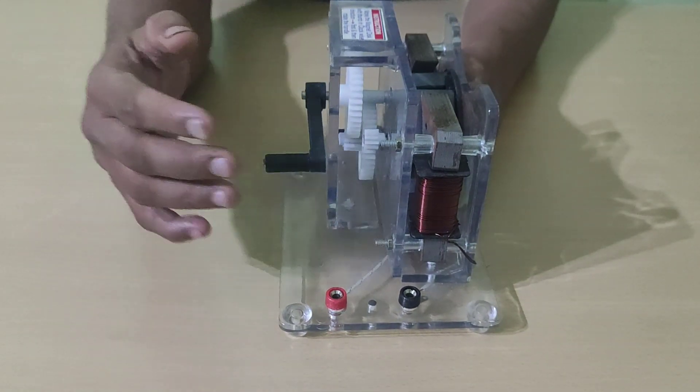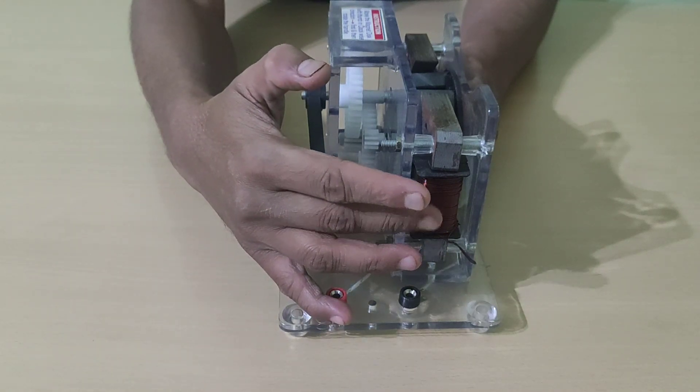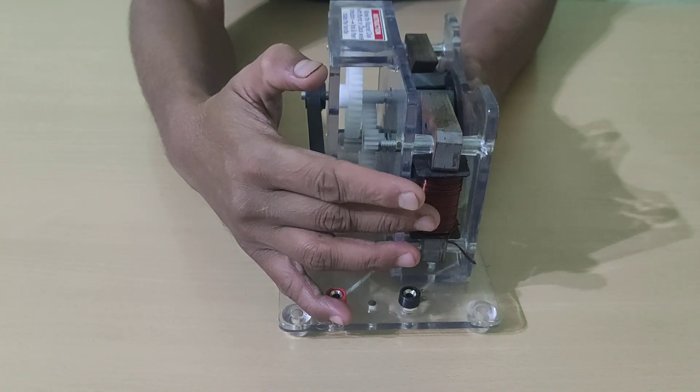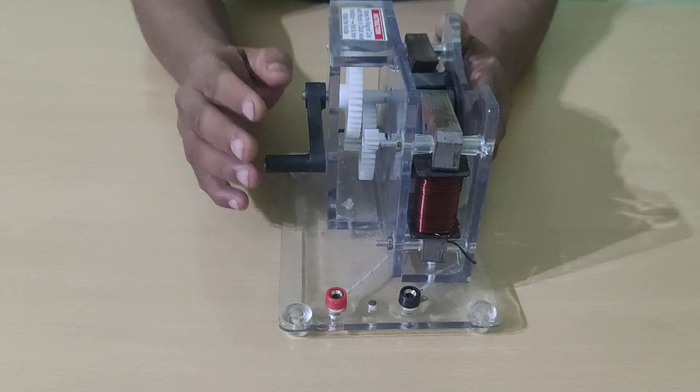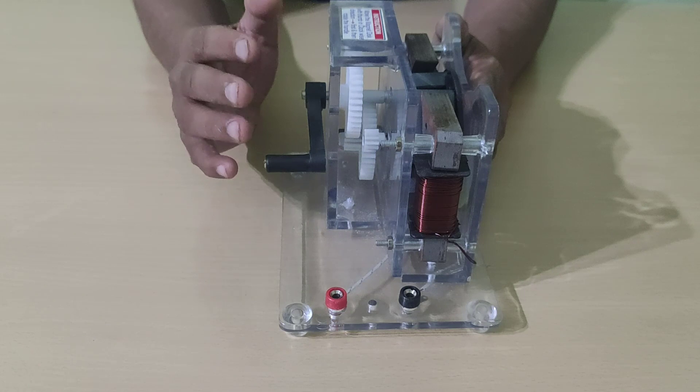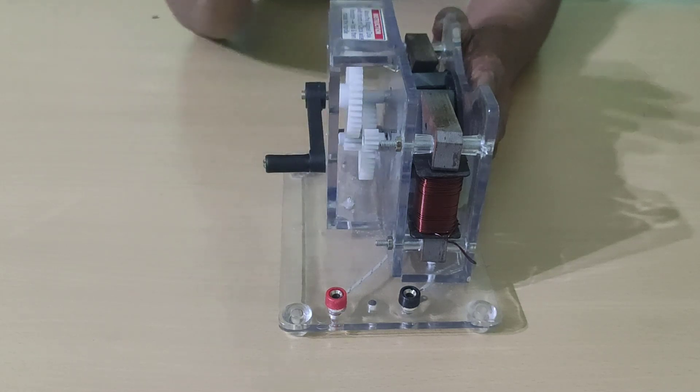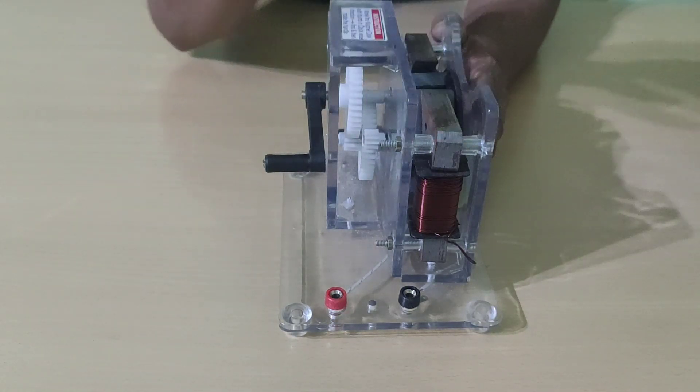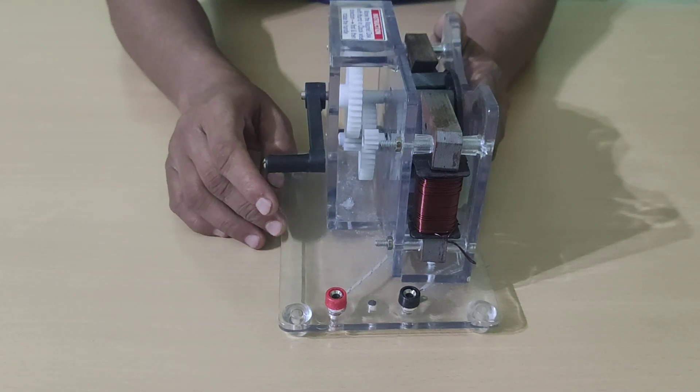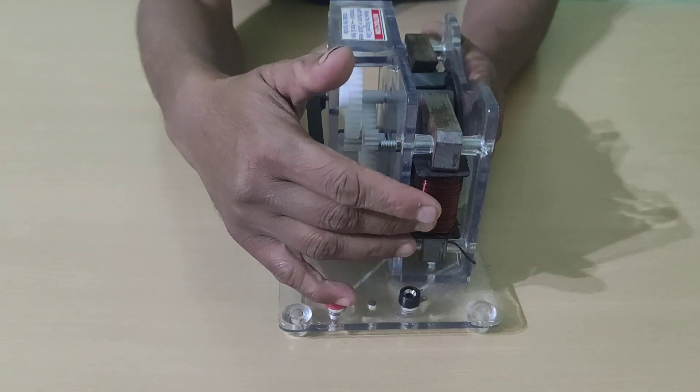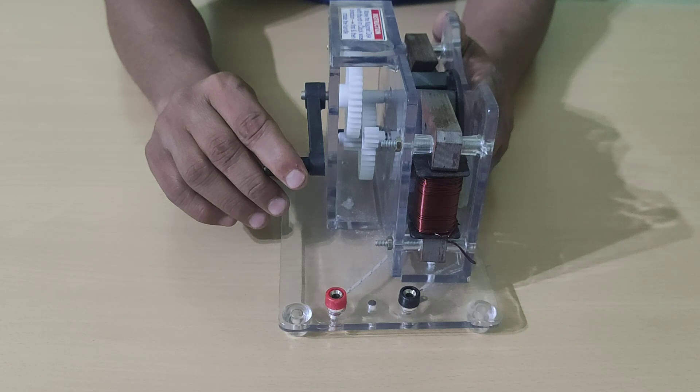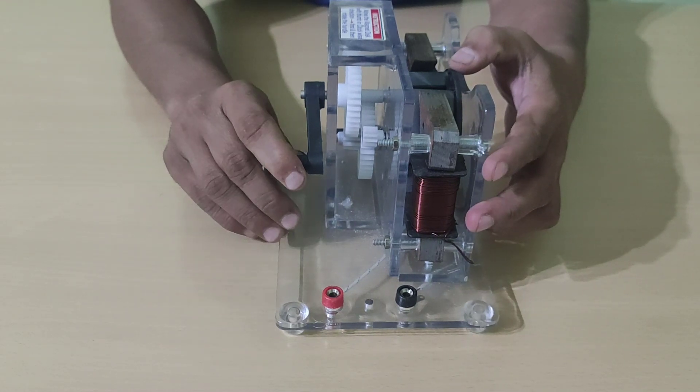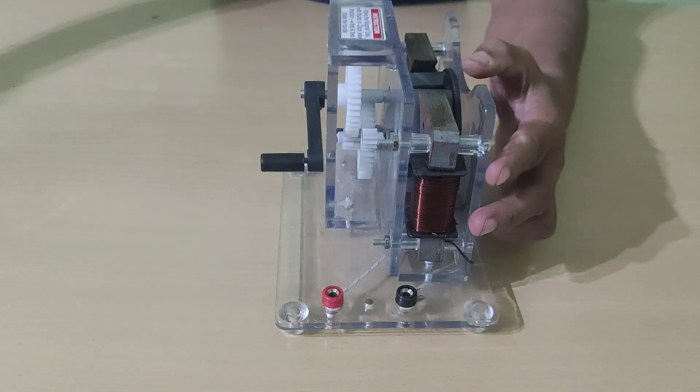Oersted discovered that when electric current flows through a copper wire or conducting wire, it creates a magnetic field around the wire. But Faraday discovered that when a moving magnet is placed near a coil or conductor, it creates electricity in this conductor. Let's see how it happens. For this purpose we'll have to rotate this disc.